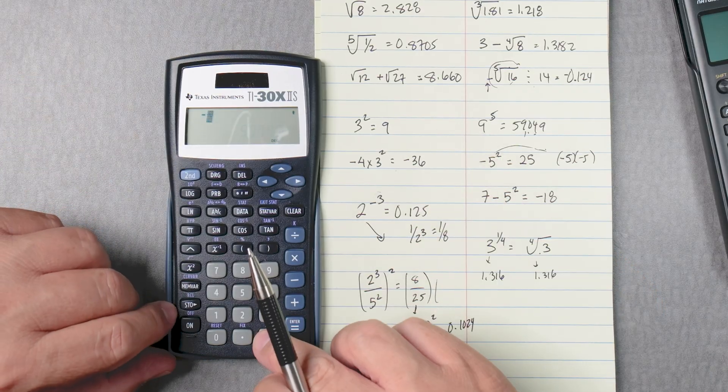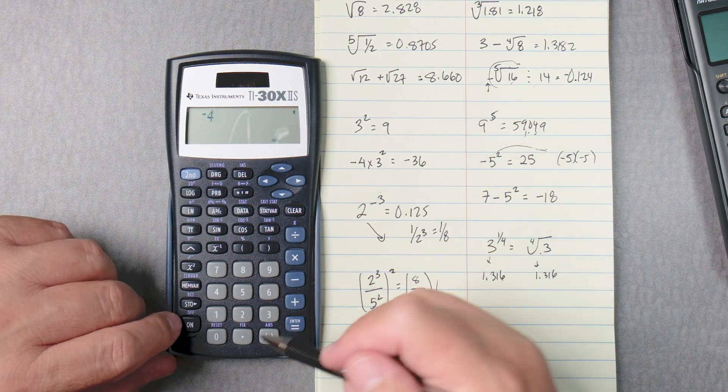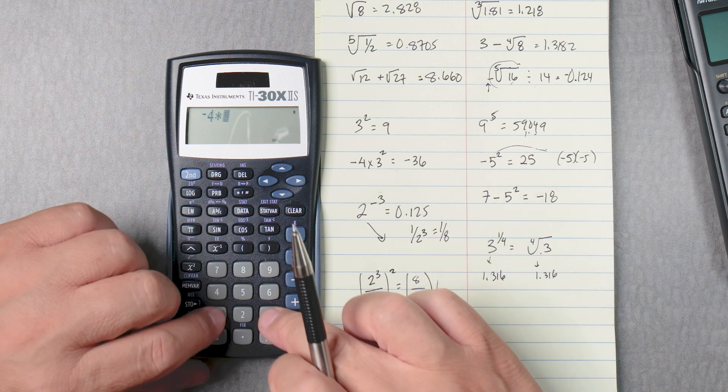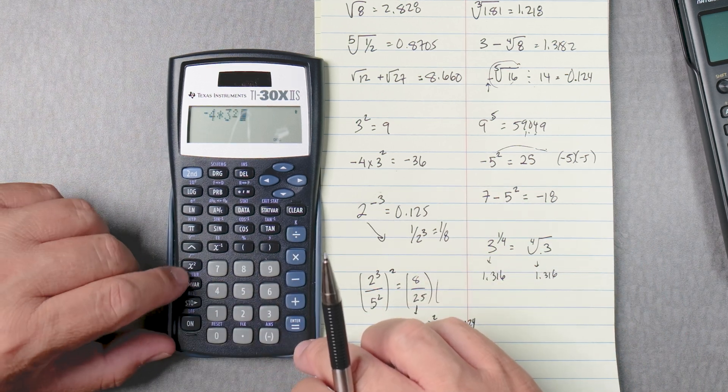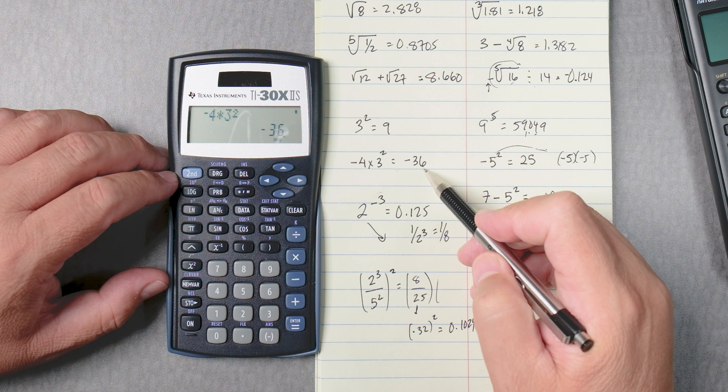This one's negative 4, not subtract 4, negative 4 times 3 and then squared equals negative 36. Okay.